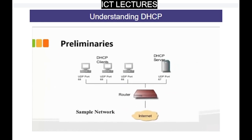Here's a preliminary structure of a network. You may have DHCP clients — for instance, three client computers — and the DHCP server whose job is to lease out IP addresses as soon as the clients are switched on. Once IP addresses are assigned to the computers, they can navigate through the router to the internet.